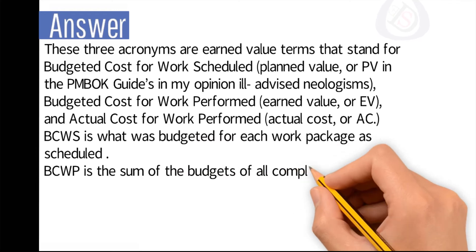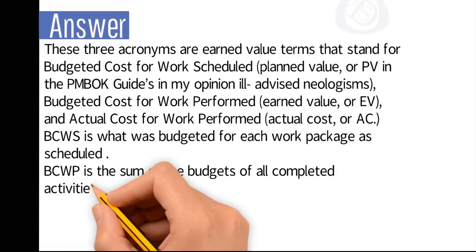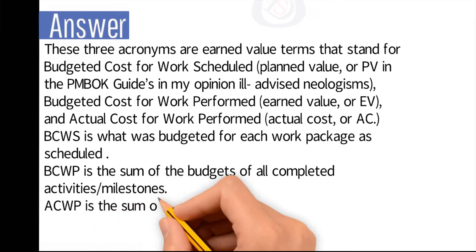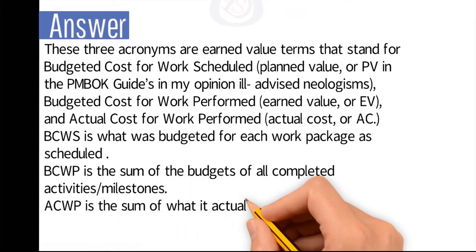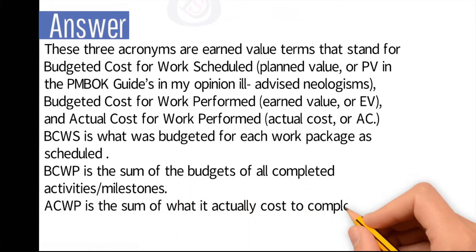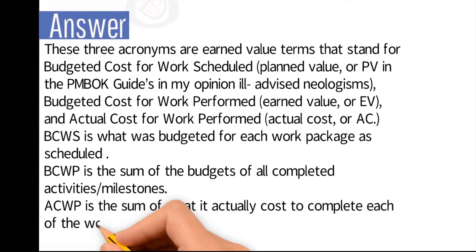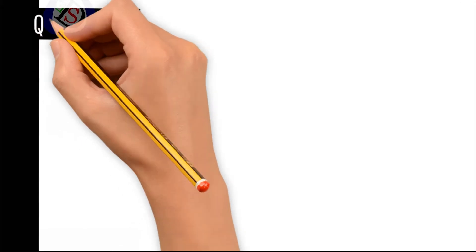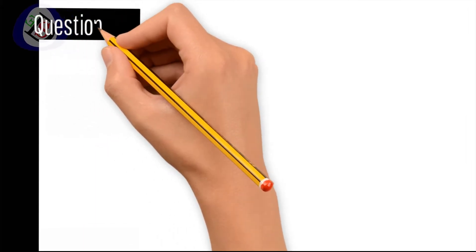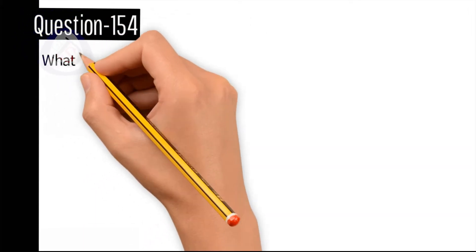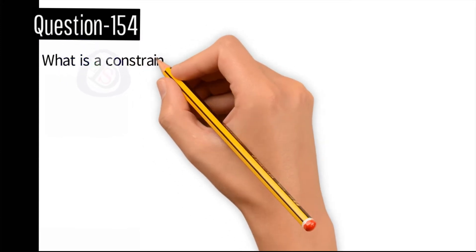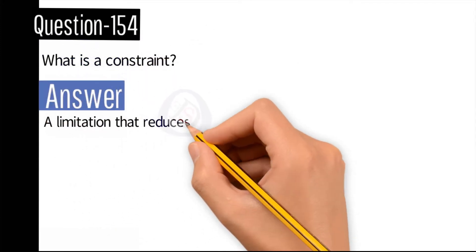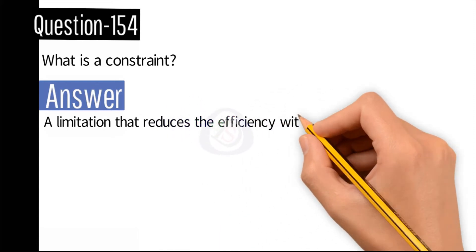BCWS is what was budgeted for each work package as scheduled. BCWP is the sum of the budget of all completed activities or milestones. ACWP is the sum of what it actually cost to complete each of the work packages or milestones.